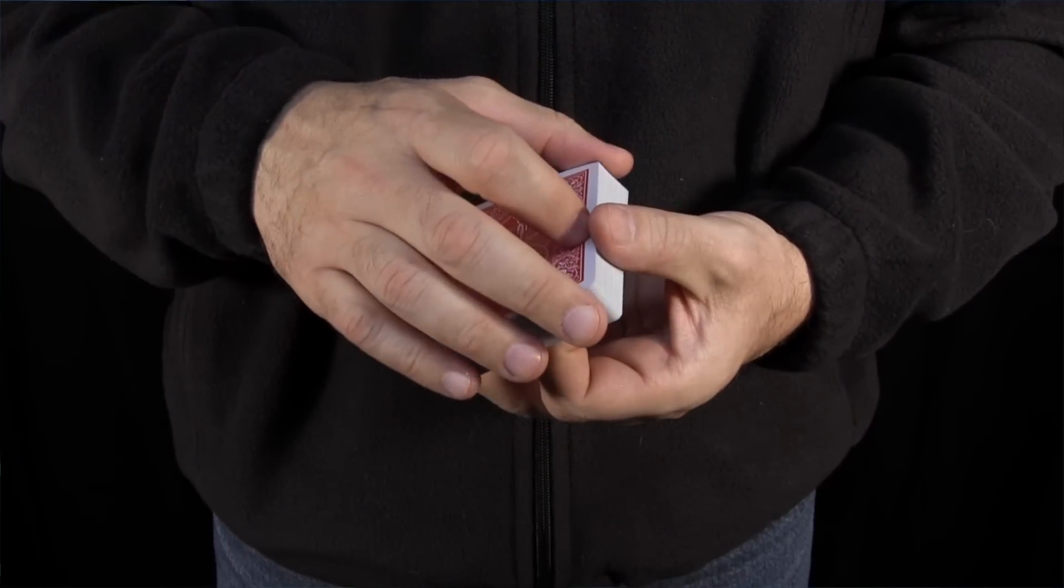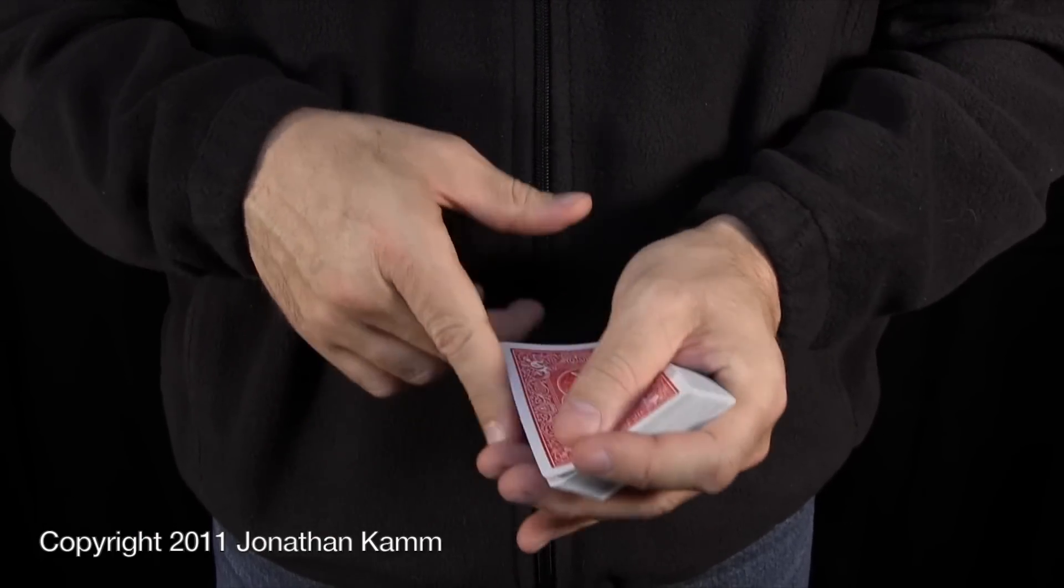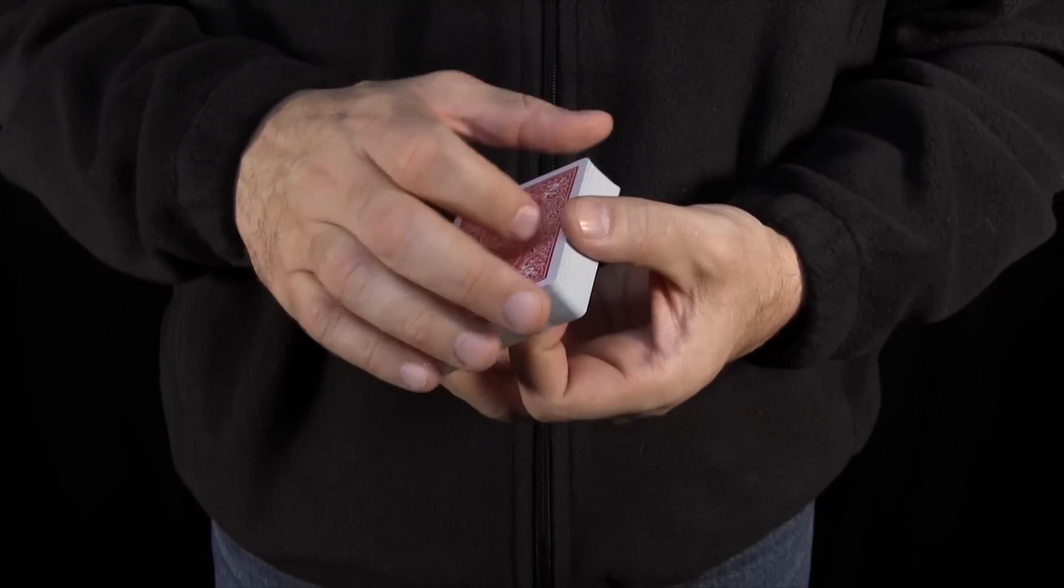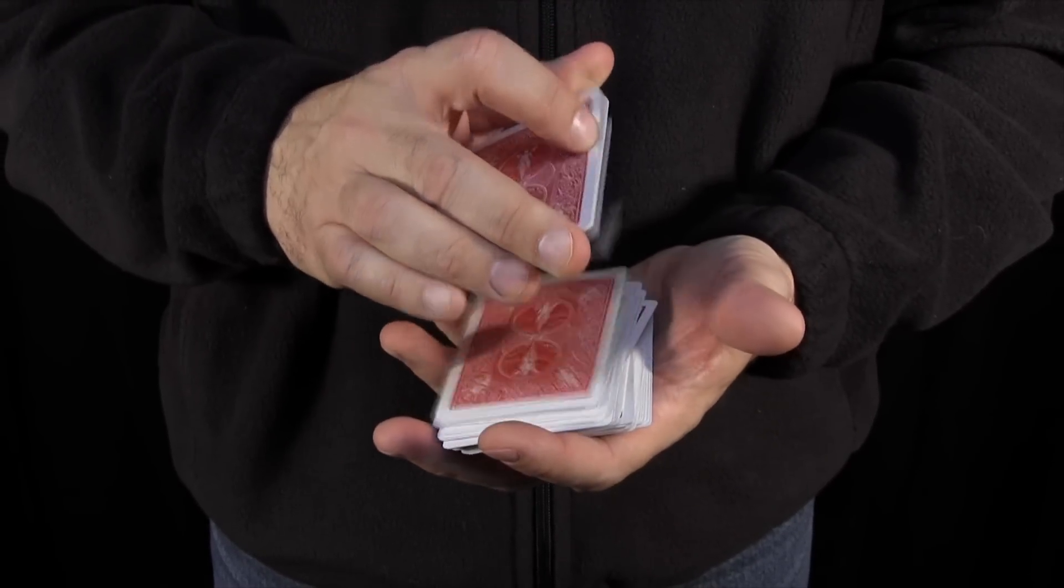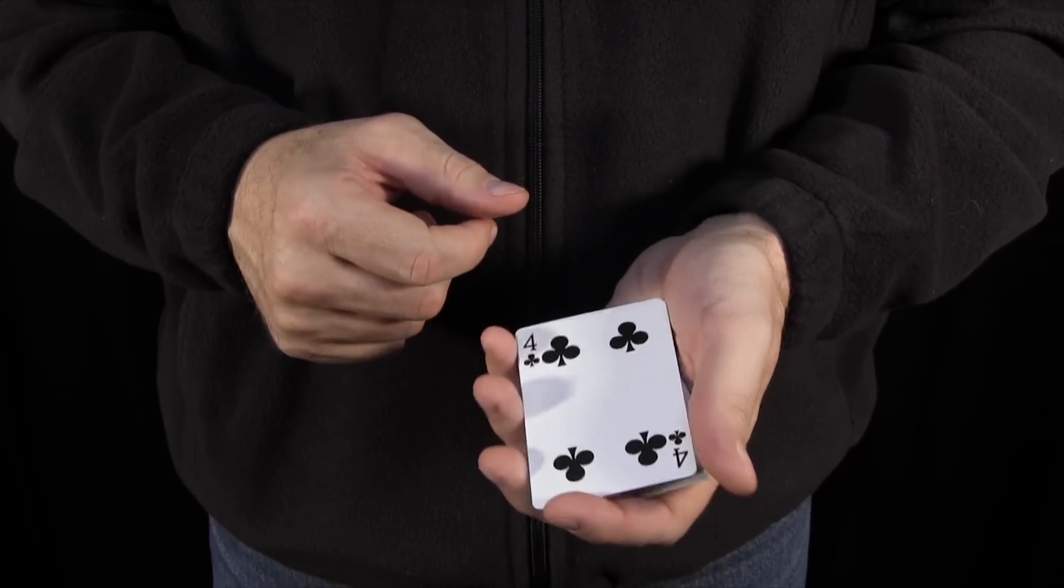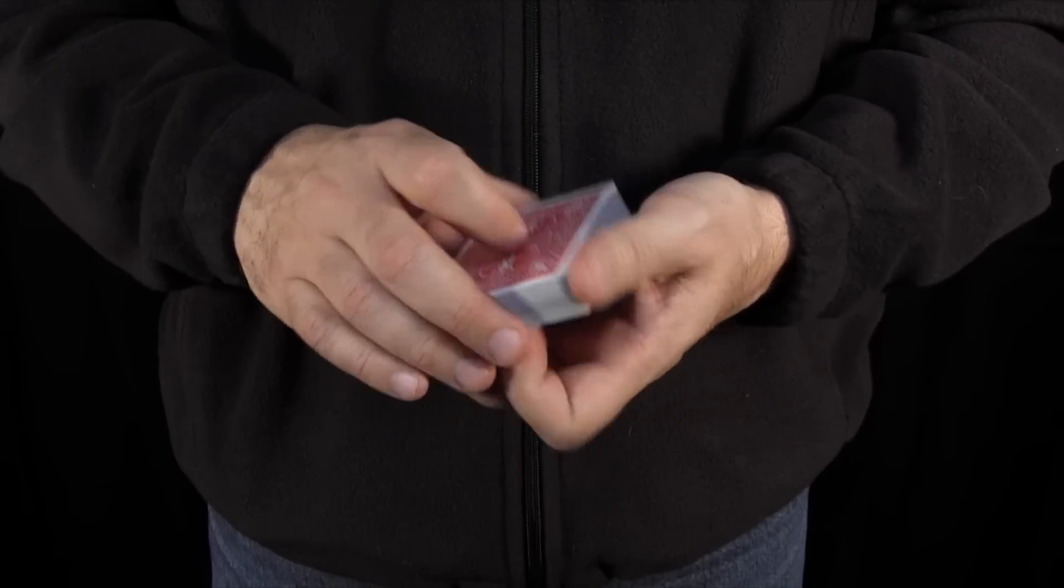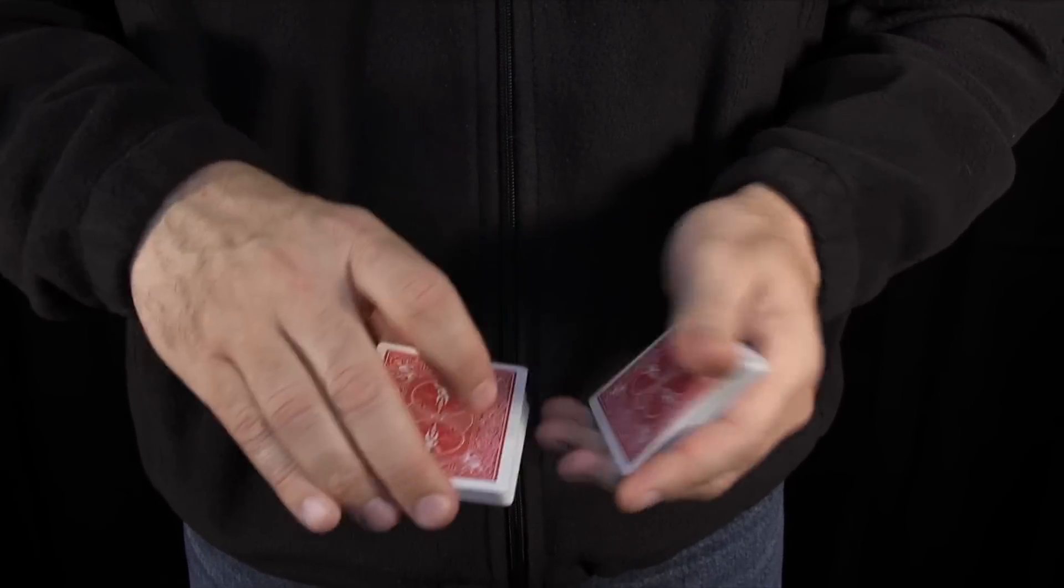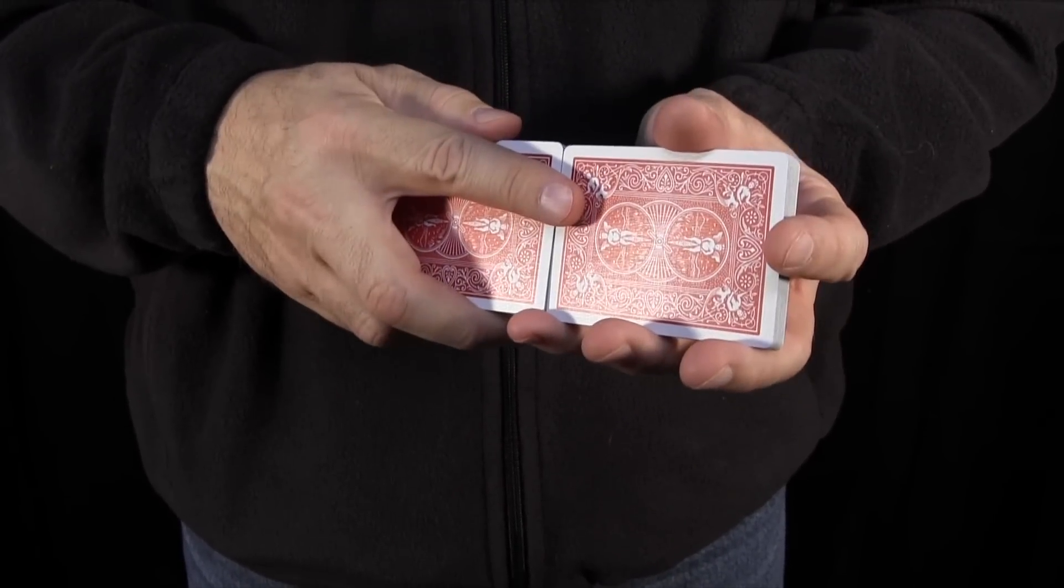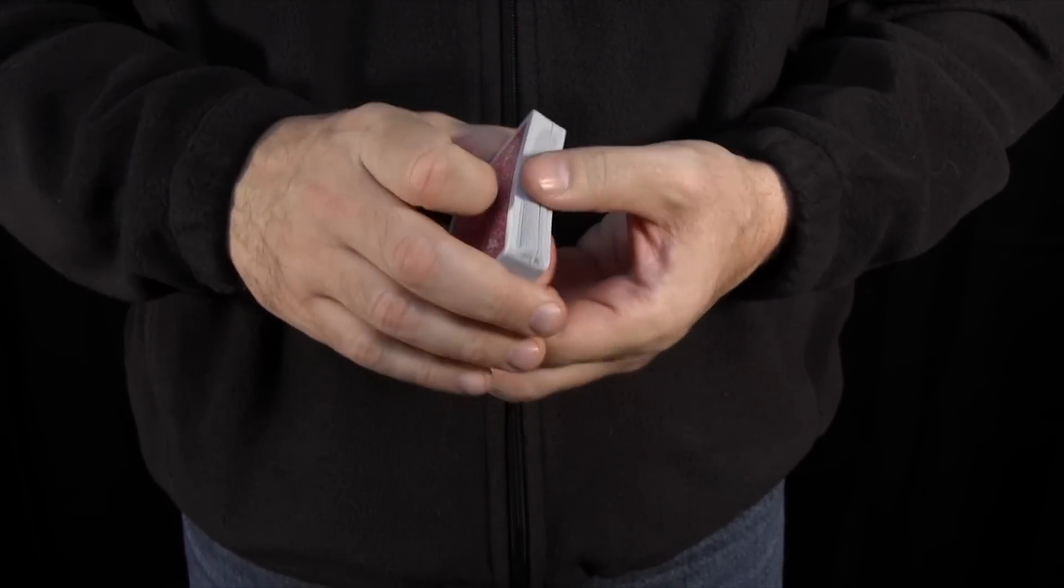All right, we need a card selected, so say stop right there. Let's see, four of hearts. That goes in the center of the deck. It's lost in the center. I'll show you it's not on top, it's not on the bottom. It is lost in the center.